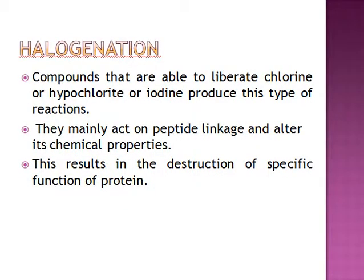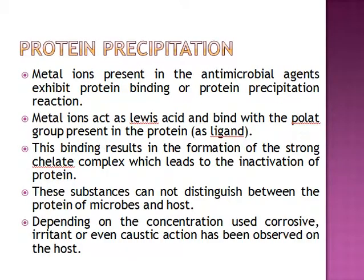The second mechanism is halogenation. Compounds that are able to liberate chlorine, hypochlorite ions, or iodine-containing substances produce their antimicrobial activity by the halogenation reaction. They mainly act on peptide linkages and alter their chemical properties, resulting in the destruction of specific functions of the protein. Further growth of the microorganism is then not possible.